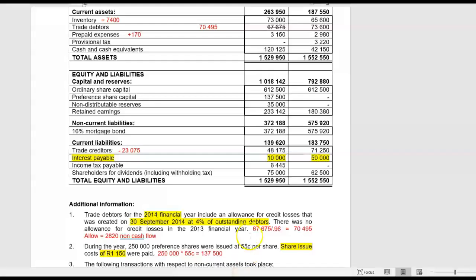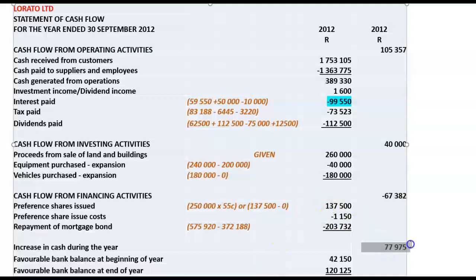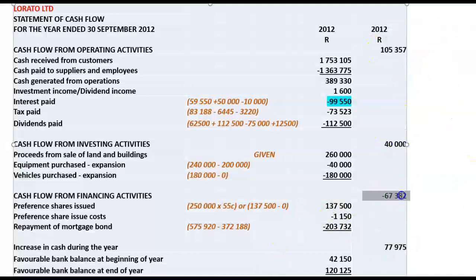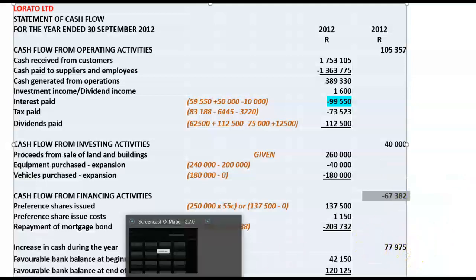Cash and cash equivalents — that's the easy one. Beginning of the year 42,000, it increased quite significantly to 120,125, so there's an increase of 77,975. To check: 105,357 plus 40,000 less 67,382 brings us back to this movement of 77,975.